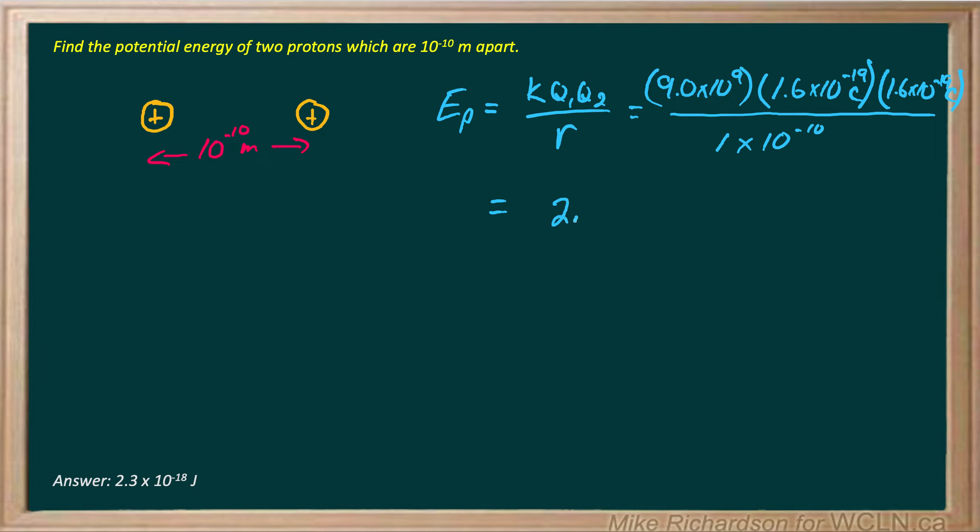So when you do that, you get a positive energy of 2.3 times 10 to the negative 18 joules.